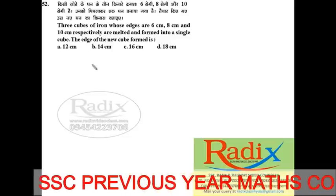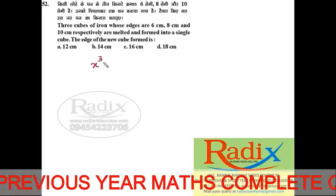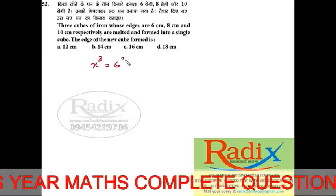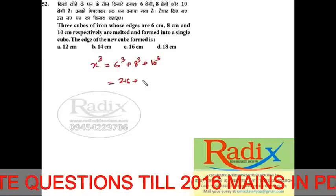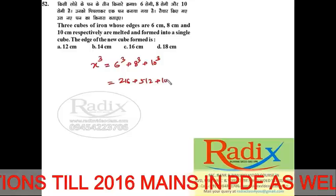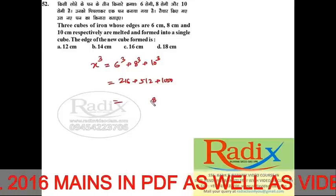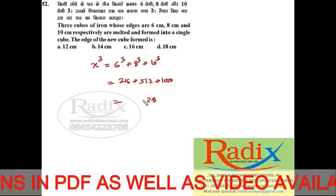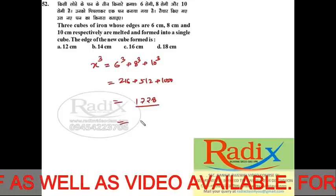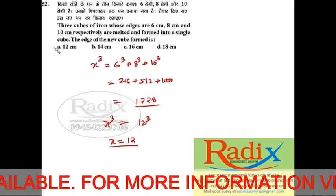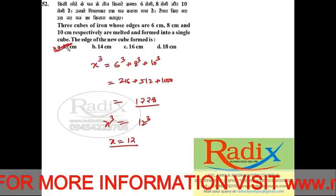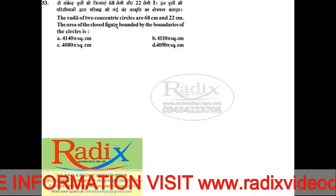Next question: Three cubes of iron with edges 6 cm, 8 cm, and 10 cm are melted and formed into a single cube. Let the edge of the new cube be x. So x³ equals 6³ + 8³ + 10³, which is 216 + 512 + 1000 = 1728. This equals 12³, so the edge of the new cube is 12. Answer is option A.